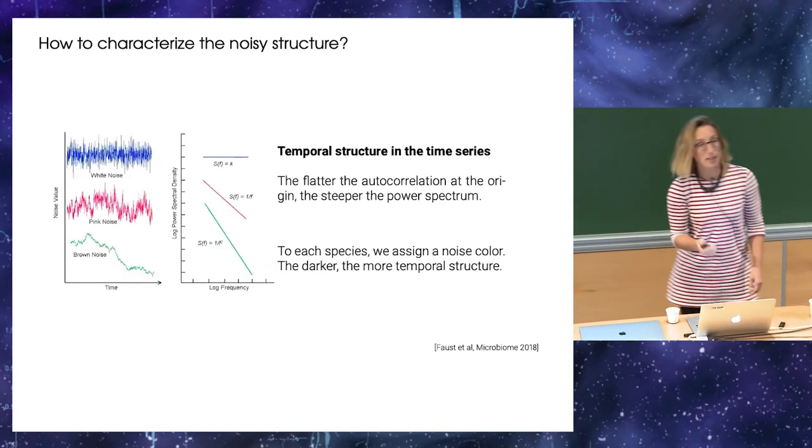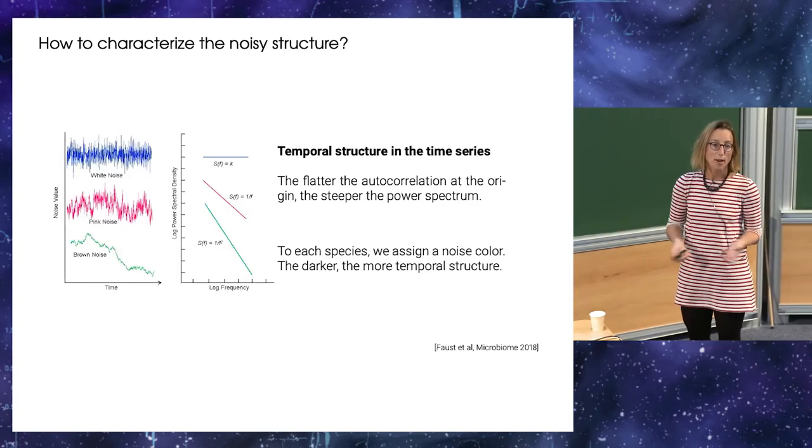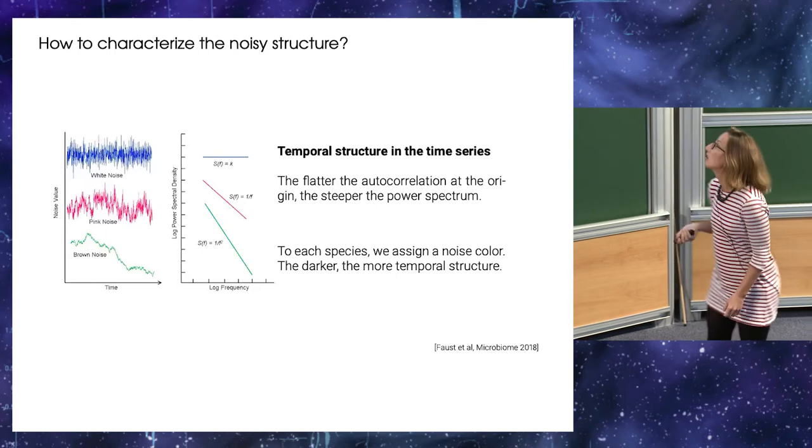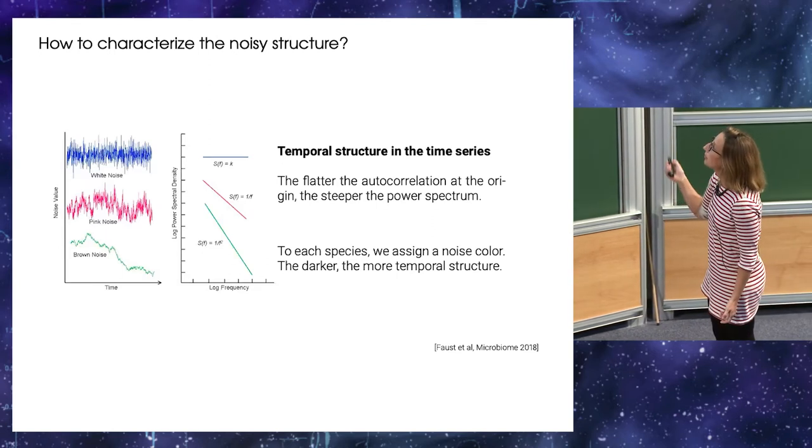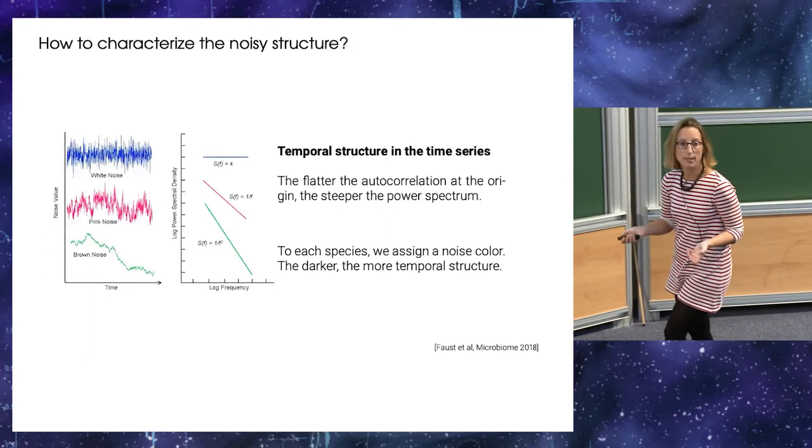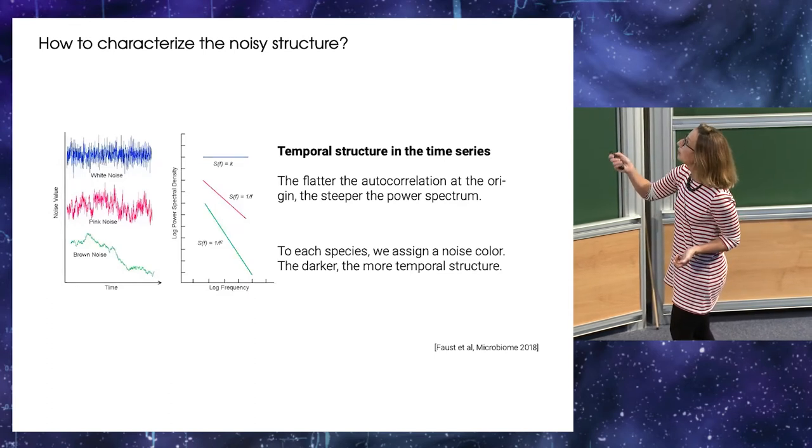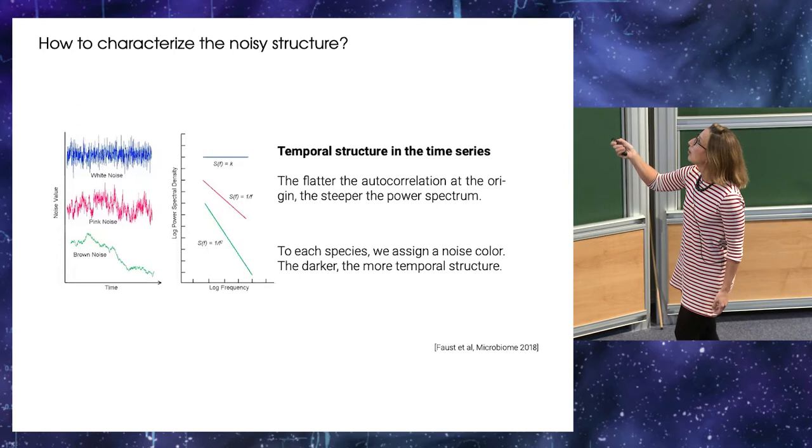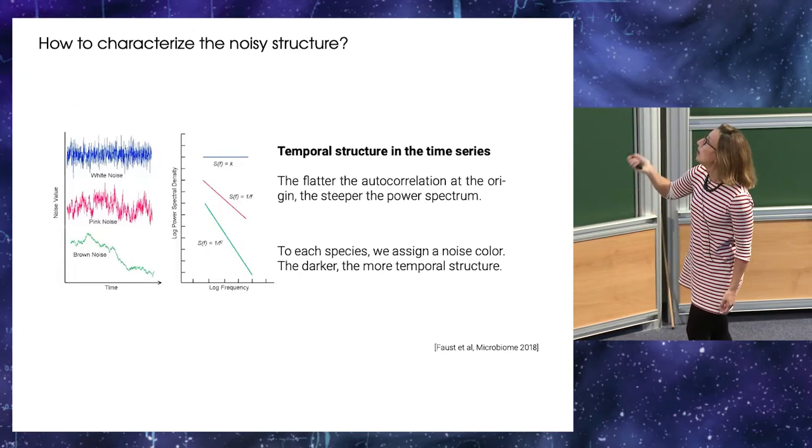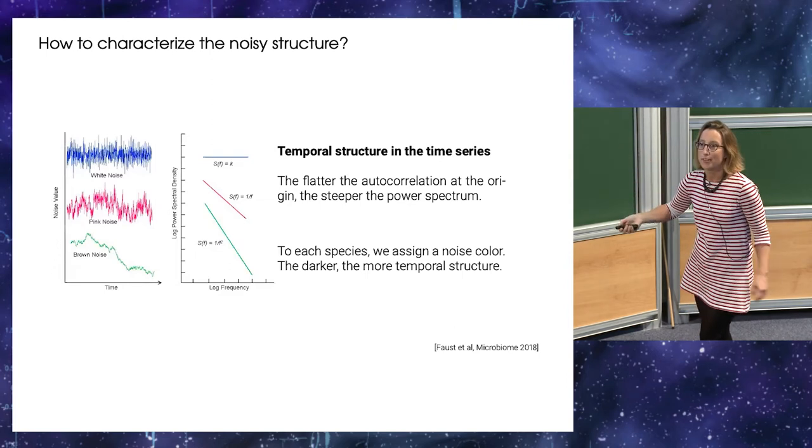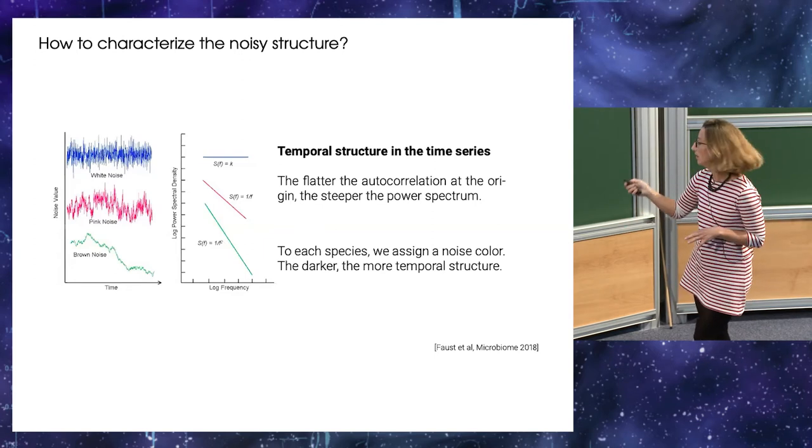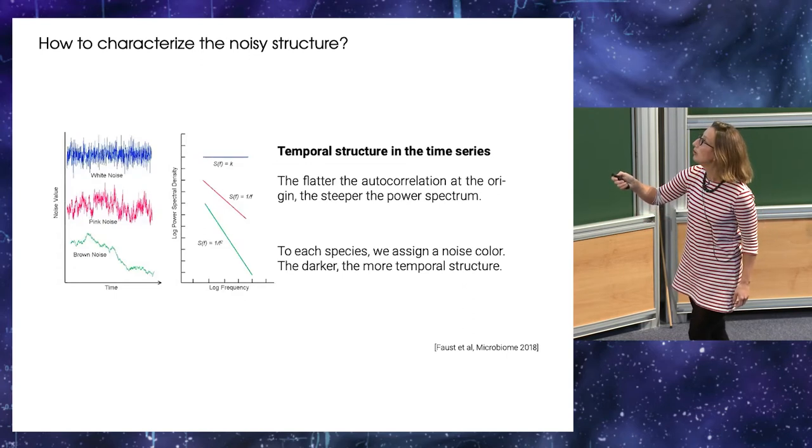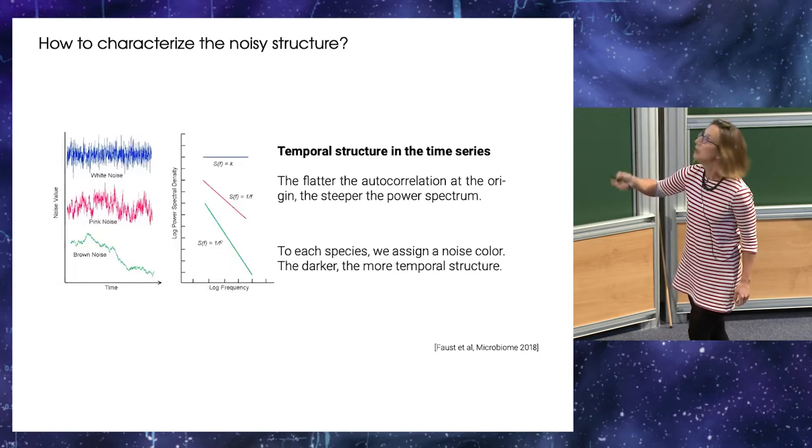But then the next characteristic we looked at is, we wanted to assess how much temporal structure there was in the time series. And for that, we computed the power spectral density for each species. And we used the well-known fact that, okay, if you compute, so the temporal structure can be encoded by the autocorrelation. And we know that the flatter the autocorrelation is at the origin, the more temporal structure there is in your time series. And this correlates with the fact that you get a steeper power spectrum. So we can associate, and it's kind of a usage in the community, to associate to this, the slope of the power spectrum to associate a color. So if you have a white noise, you will have the flat power spectrum.